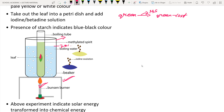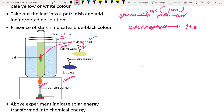Methylated spirit is a methyl-group-containing alcohol. After treating in methylated spirit, remove the leaf. The leaf will now appear pale yellow-white in color, which indicates that the green chlorophyll has dissolved into the methylated spirit.